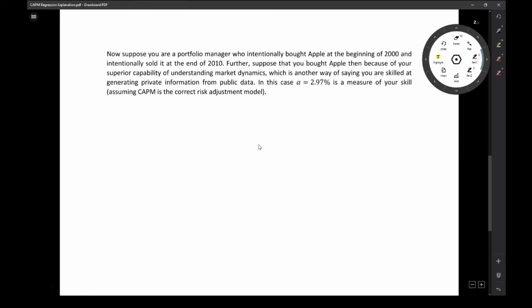So those are two different ways to interpret this alpha. One is that during this time period, something was just a little bit weird. The other is that CAPM isn't true and we're just not capturing all the additional risks. Now let's shift gears a little bit. And instead of thinking about Apple as a stock, let's think about an investment manager and what alpha means for an investment manager. So let's suppose you are a portfolio manager and that you intentionally bought Apple in 2000 and then intentionally sold it in 2010.